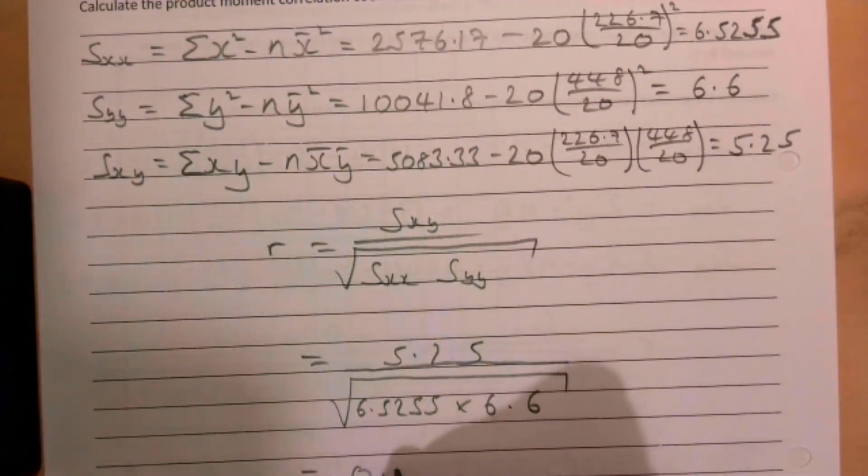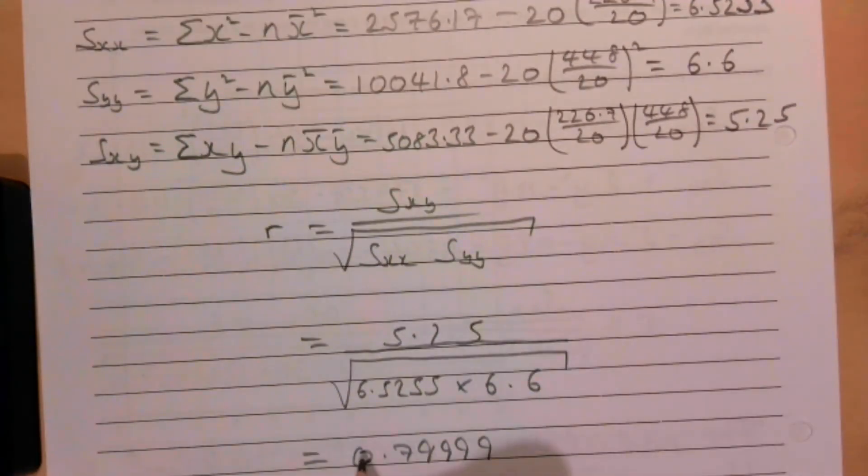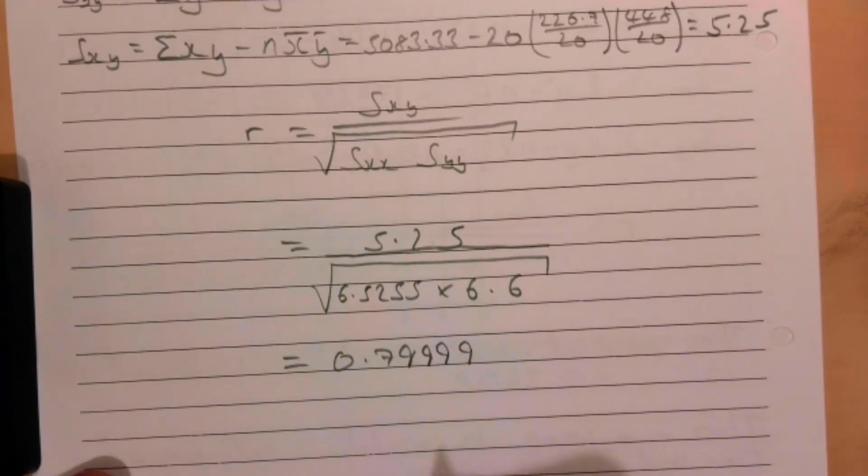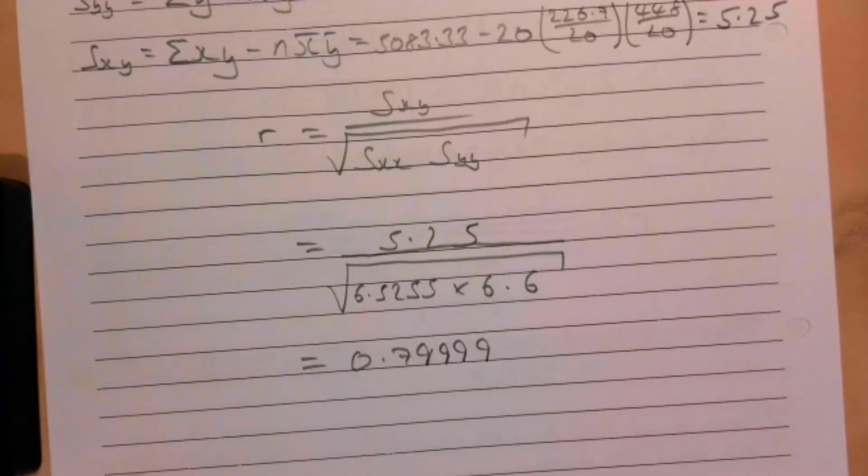And if you put that in you get some big long number, 0.79999, I think it might be 0.80 by the time it works out, but if we're going to three significant figures obviously 0.800.